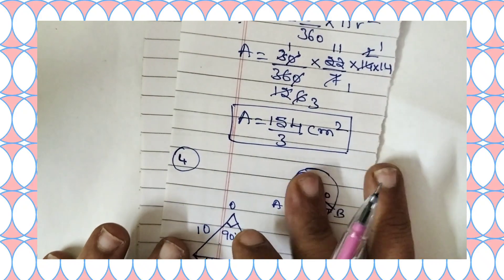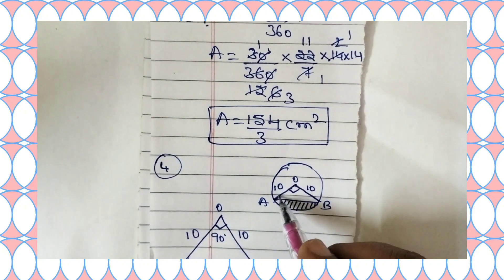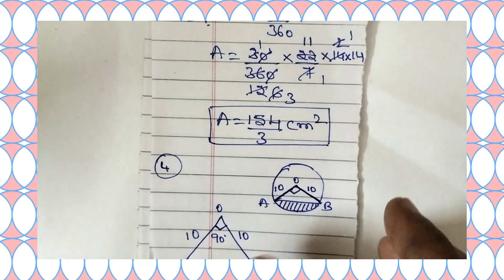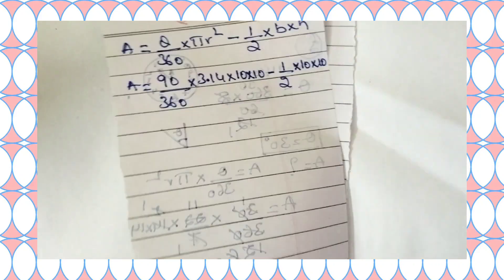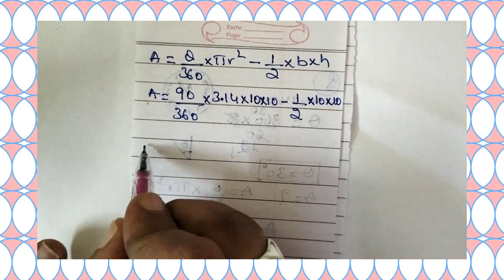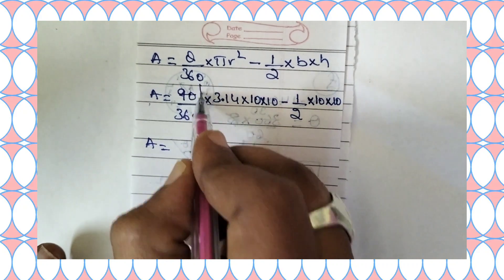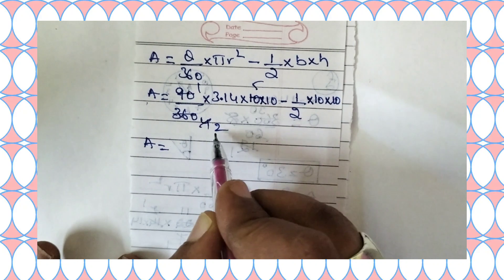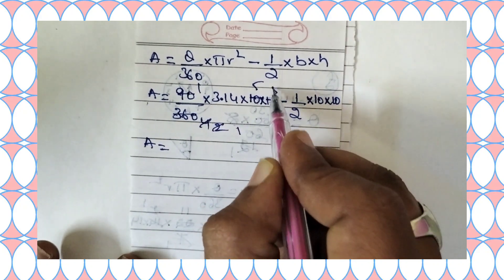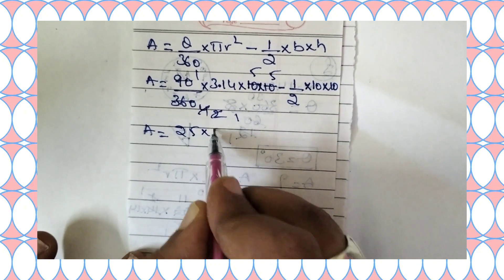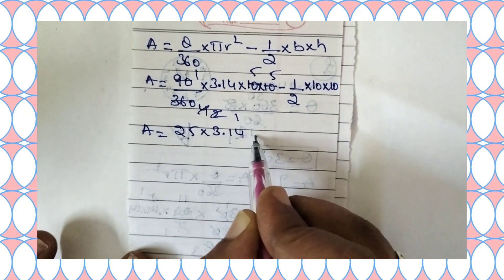Area of minor segment equals 90 divided by 360 into 3.14 into 10 into 10, minus half into 10 into 10. This simplifies to 25 into 3.14 minus 50, which equals 78.50 minus 50.